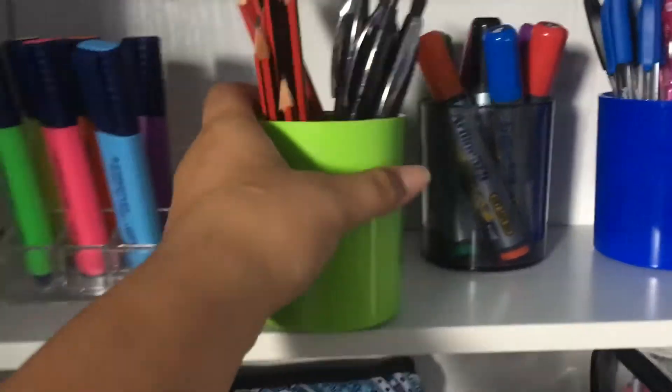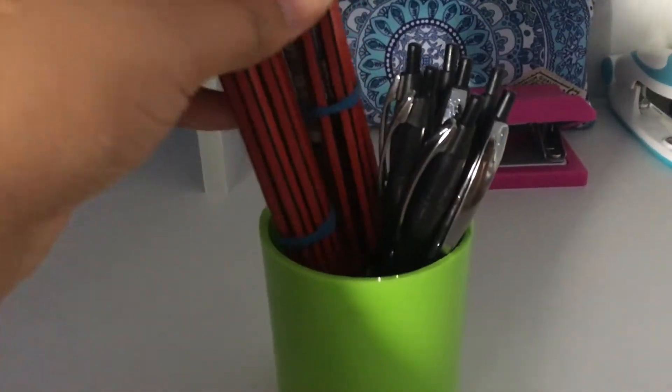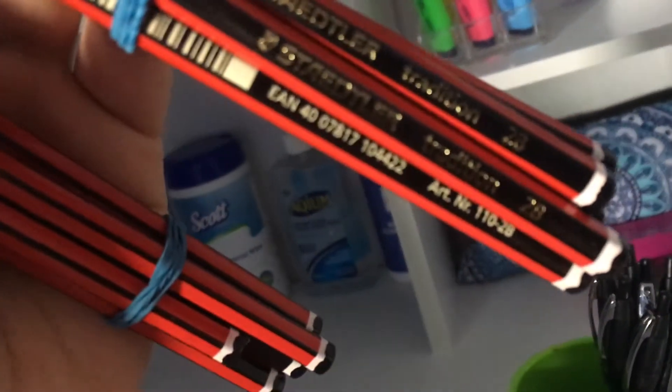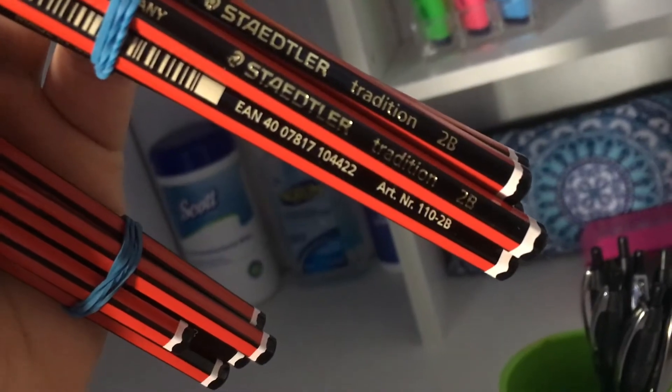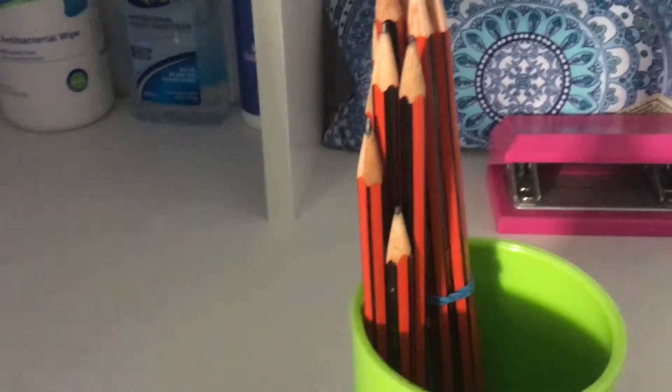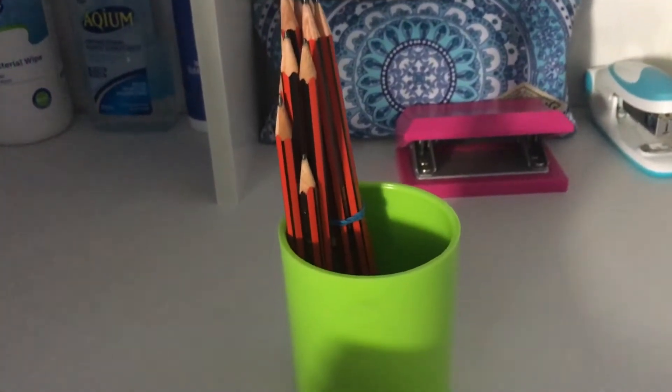Whenever I'm writing something, this is the pen holder I go straight to. I've got my Stadler 2B pencils here. They work really well because these are the pencils we're meant to use in exams at our university. I also like to use these to write anything that doesn't need to be concrete - I can just erase it out. It's a lot easier than pen and highlighter.